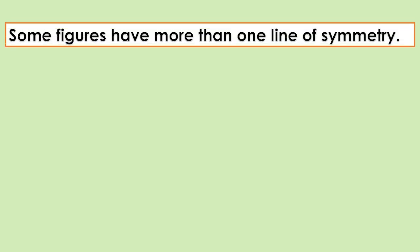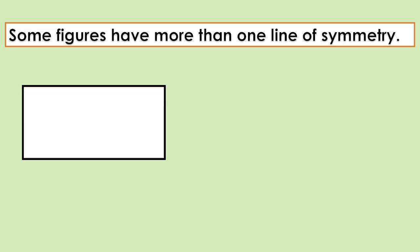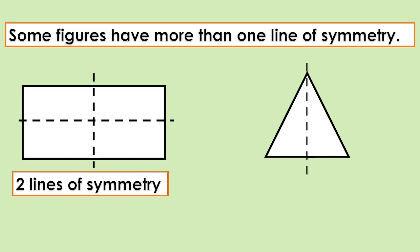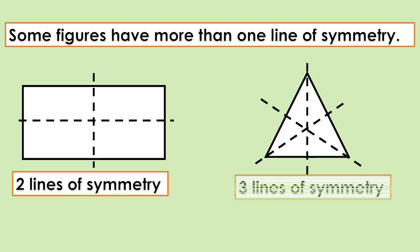Some figures have more than one line of symmetry. For a rectangle, there are two lines of symmetry. For a triangle, there are three lines of symmetry — one, two, three.